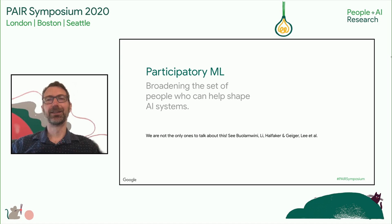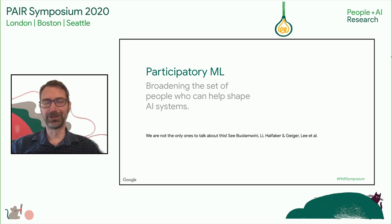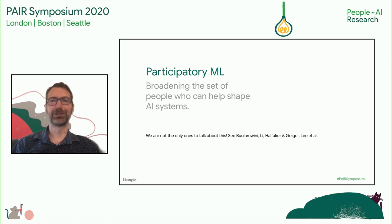The idea here is that ML is such an important technology, and it affects so many people, that it's critical that we have a wide set of people who can help in the development, deployment, monitoring, and thinking about it. We're certainly not the only people with this goal — it's a generally shared goal. But it's hard, because it intrinsically means you need collaborations across people with different types and levels of expertise.